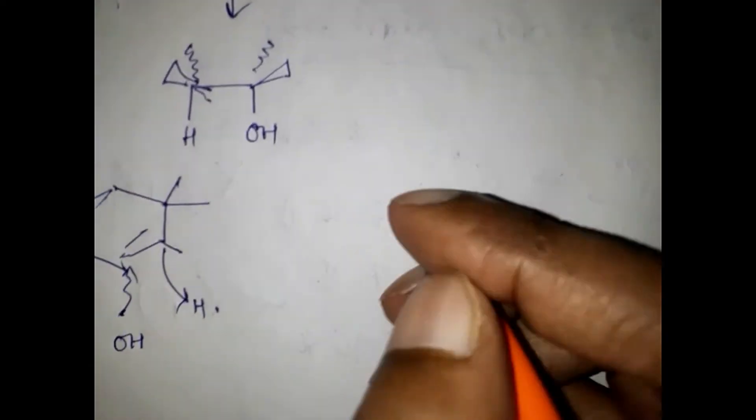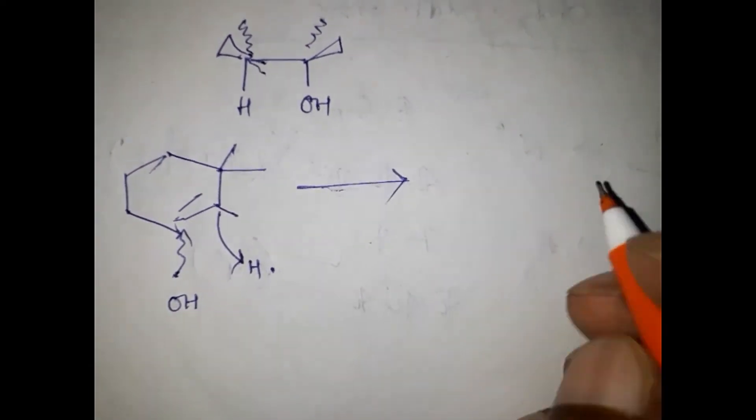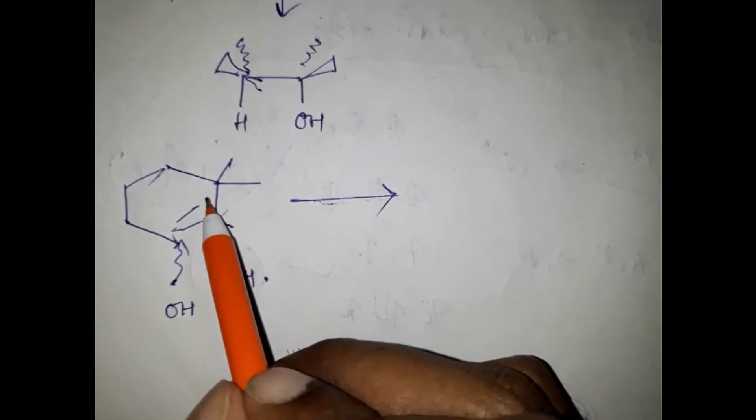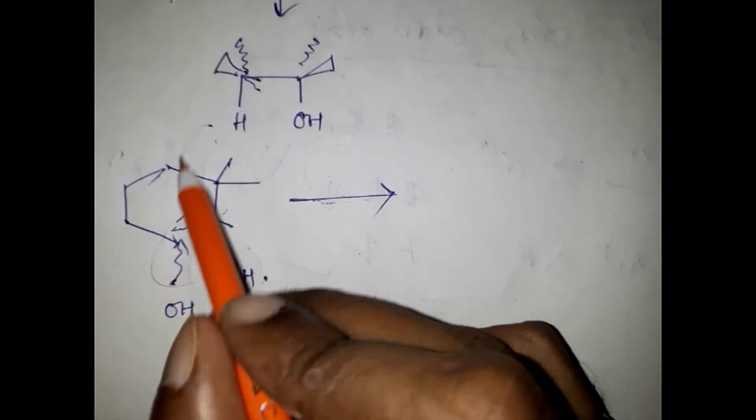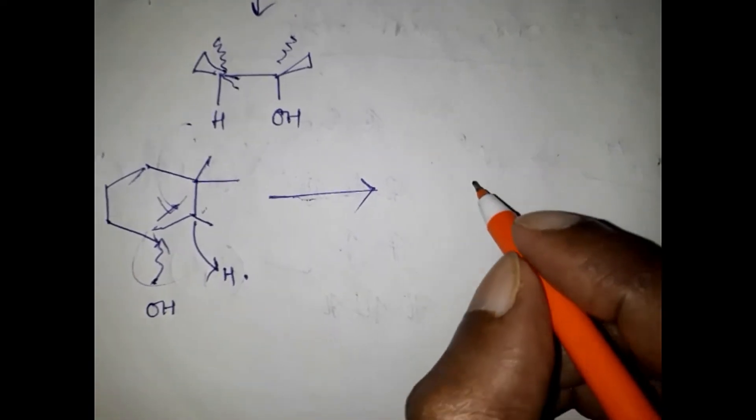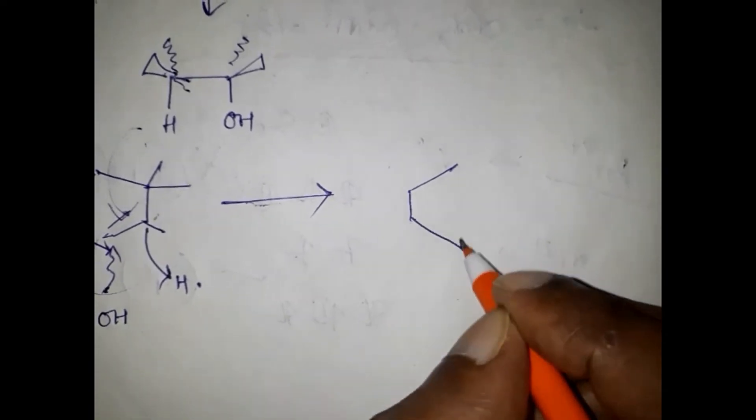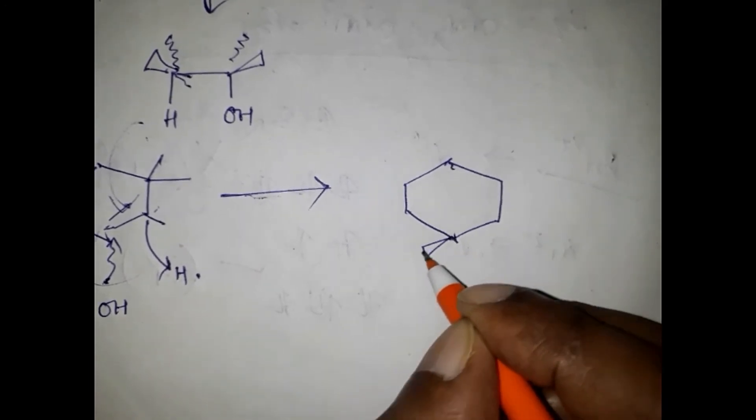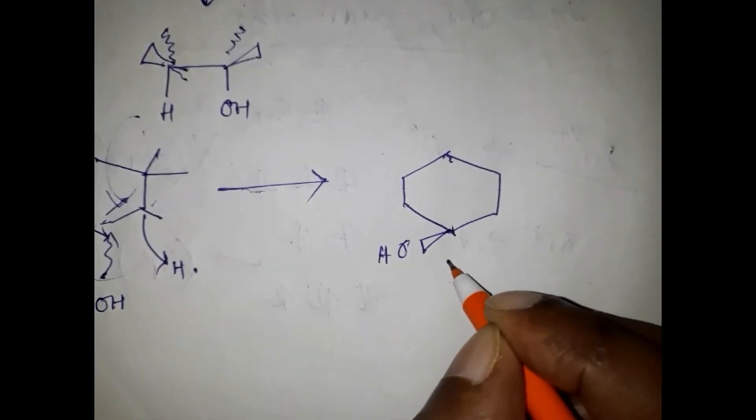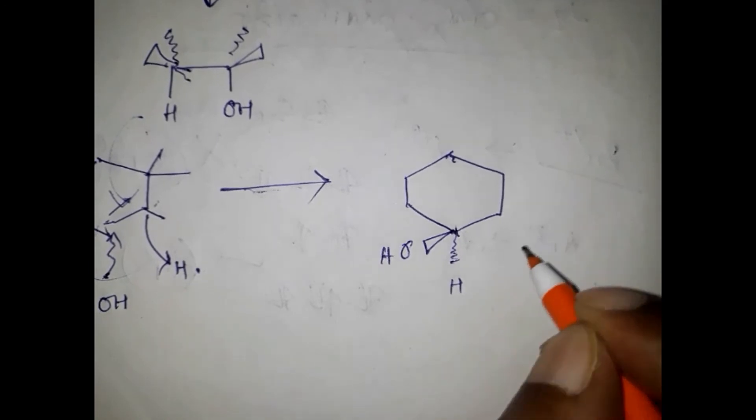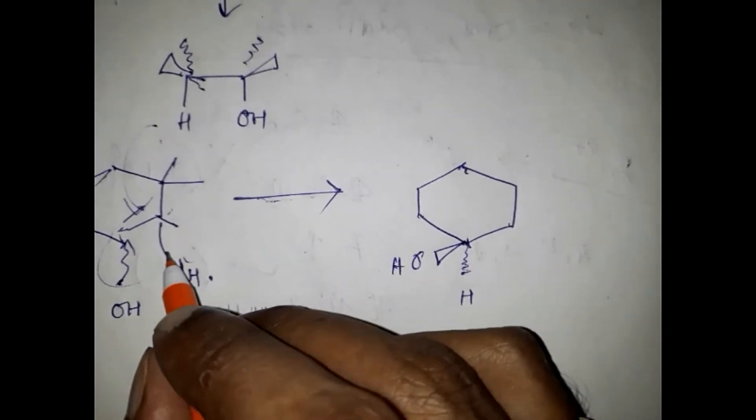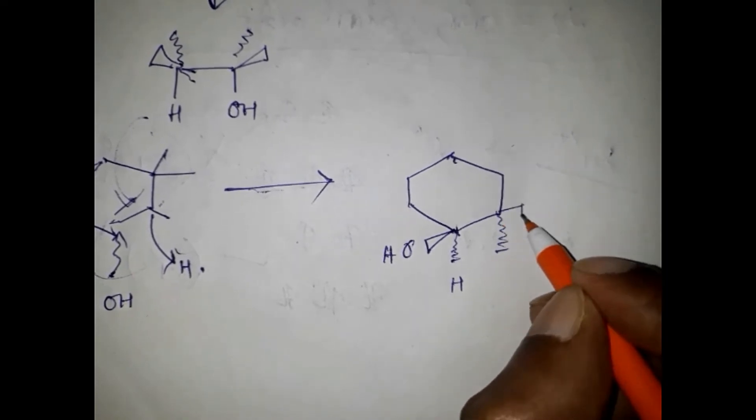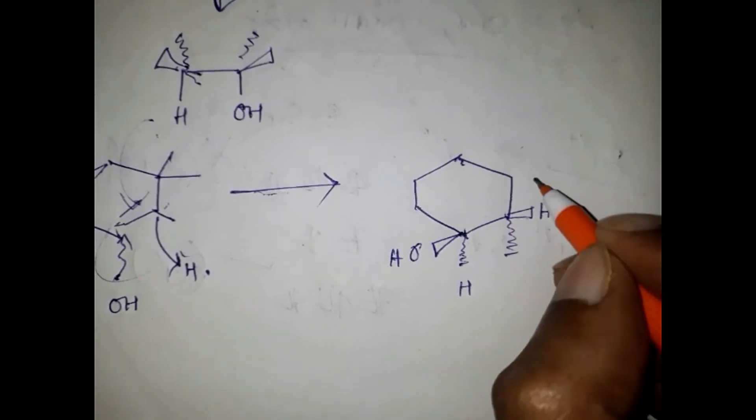As this is a syn addition, we are assuming that the reaction is occurring from this side, that is OH and H will be added from above the plane. So OH will be like this. The H will go down the plane. Similarly, H will be added from the upper side, so the methyl will be below the plane.